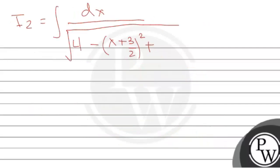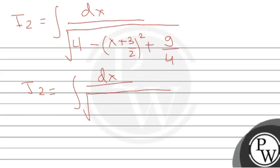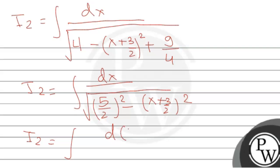Adding 9/4 to 4 gives us 25/4, which is (5/2)². So the denominator becomes (5/2)² minus (x + 3/2)². We rewrite I2 as the integral of d(x + 3/2) upon √[(5/2)² - (x + 3/2)²], since the derivative of (x + 3/2) with respect to x is 1.